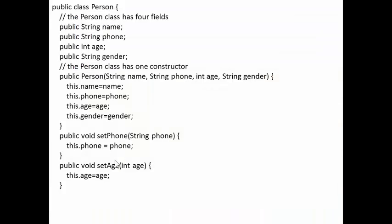Here's some Java code for the class person. The double slash is a comment. So first we define four variables in the class person. We also define a constructor method.